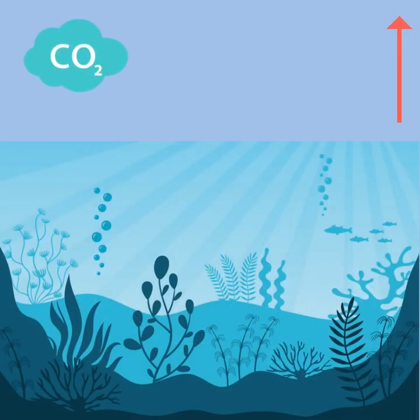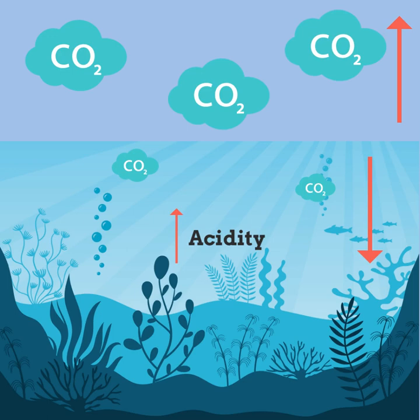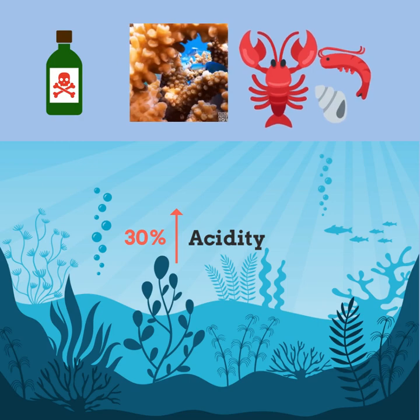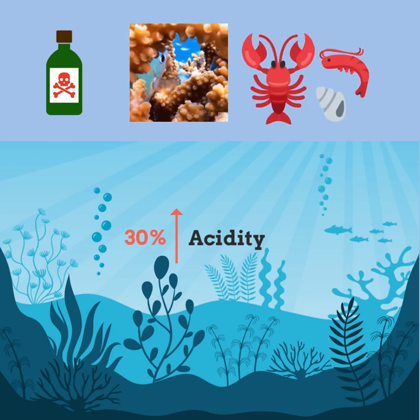With increased concentrations of CO2 in the atmosphere comes a decreased capacity of the ocean to hold that CO2. The increases in carbon concentrations also contribute to the increased acidity of the ocean. Since the Industrial Revolution, the ocean has become 30% more acidic. High acidity levels are detrimental to coral reefs, shellfish, and much more.